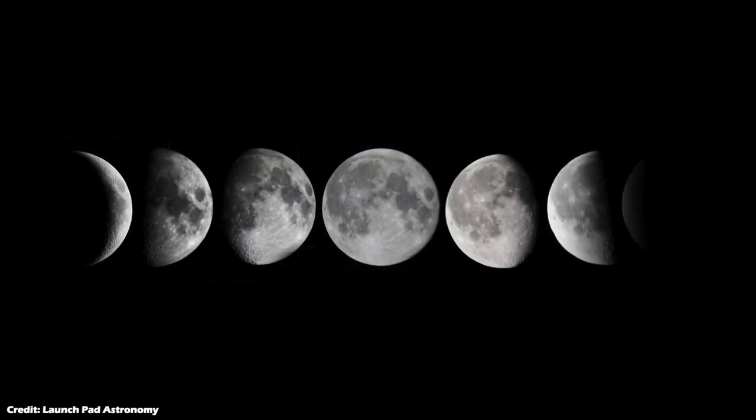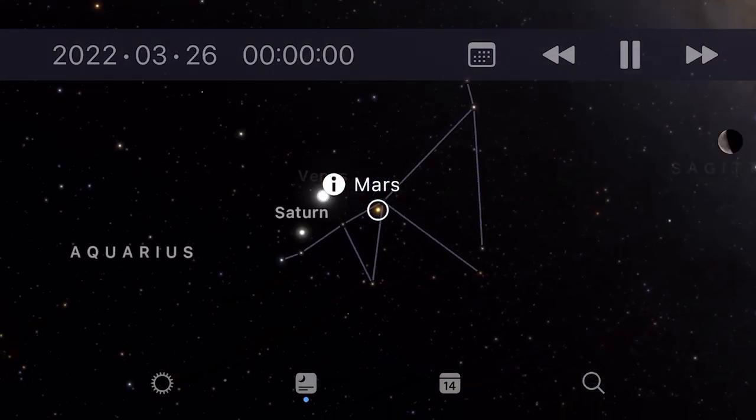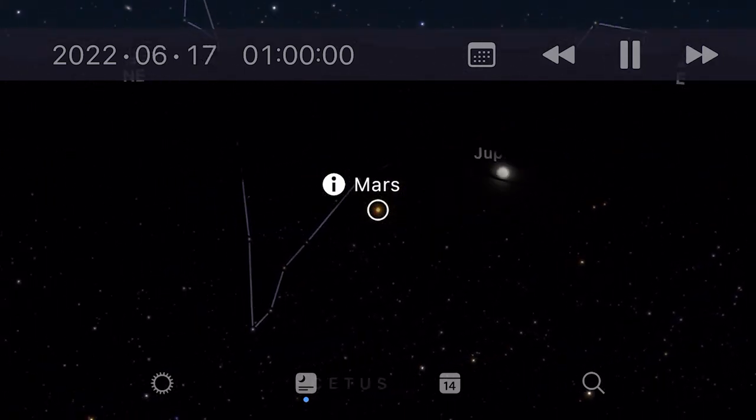Of course we see the moon go through its phases over a period of a month, and if you're keen on keeping track you can also see the planets traversing across an otherwise static background of stars. But that is about it.